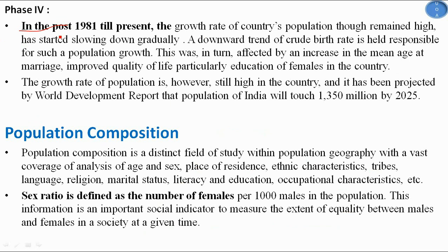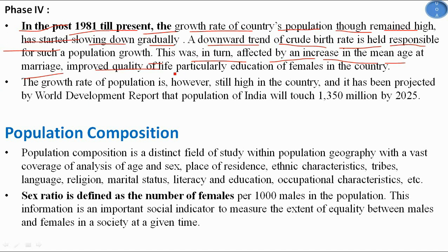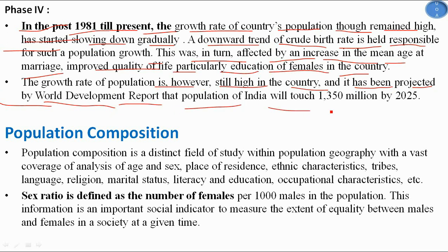Phase 4, from 1981 to the present: the growth rate, while still high, has started slowing down gradually. A downward trend in the crude birth rate is held responsible, which in turn was affected by an increase in the mean age at marriage and improved quality of life, particularly education of females. The World Development Report projected that India's population would touch 1,350 million by 2025.